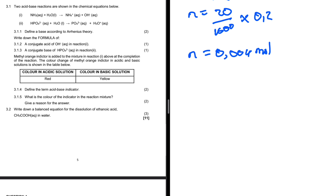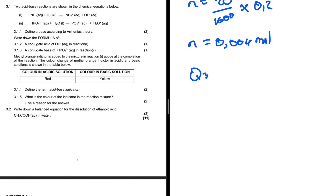Question 3: two acid-base reactions are shown below. Reaction 1 is NH₃ plus water to give NH₄⁺ plus OH⁻. Reaction 2 is HPO₄²⁻ plus water to give PO₄³⁻ plus H₃O⁺.